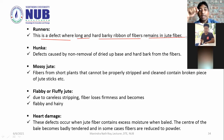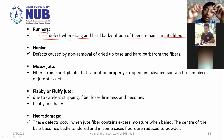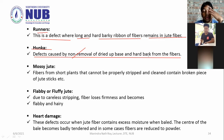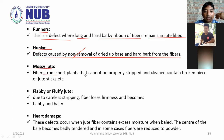In the jute fiber, long and hard barky ribbons of fibers remaining in the jute are a defect caused by non-removal of dried-up hardened bark from the fiber. Non-removable or dried-up base and hard bark. Fiber from short plants cannot be properly stripped and cleaned, and contains broken pieces of jute sticks.